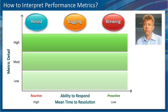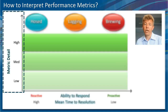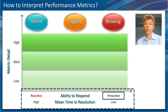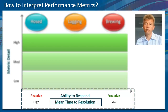This diagram illustrates different levels of maturity and how metrics are applied to application monitoring. The vertical axis represents metric detail, going from low to high. The horizontal axis shows the ability to respond to issues — on the left the reactive way, on the right the proactive way. It also relates to mean time to resolution, from high to low.